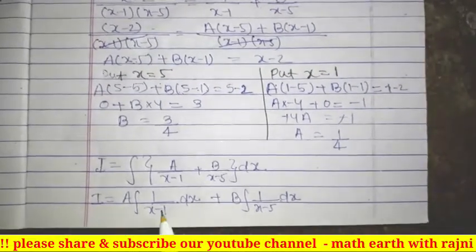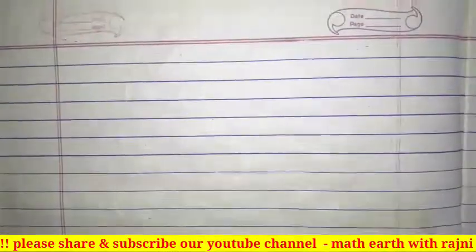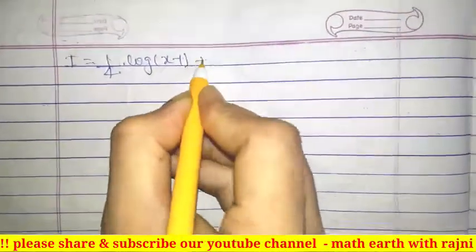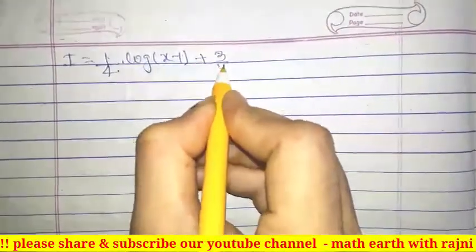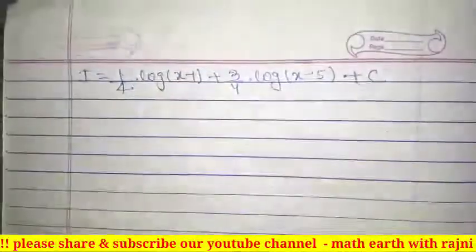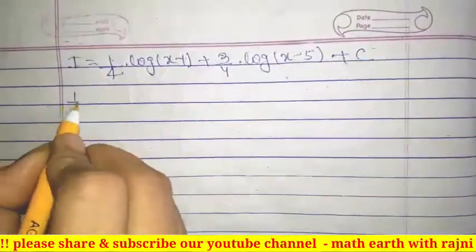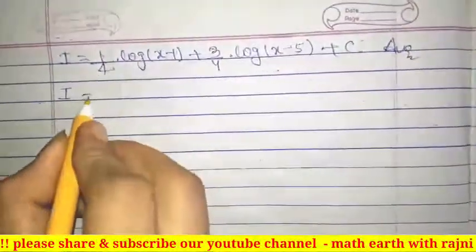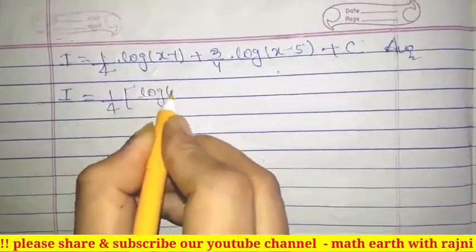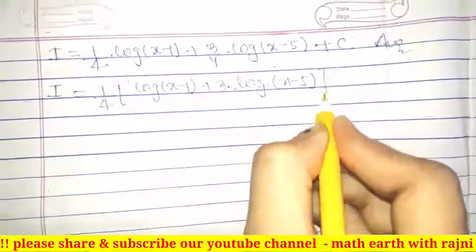We will put the values of A and B. The integration of 1 by x dx equals log x, so we put that here. I equals 1 by 4 into log (x minus 1) plus 3 by 4 into log (x minus 5) plus C.